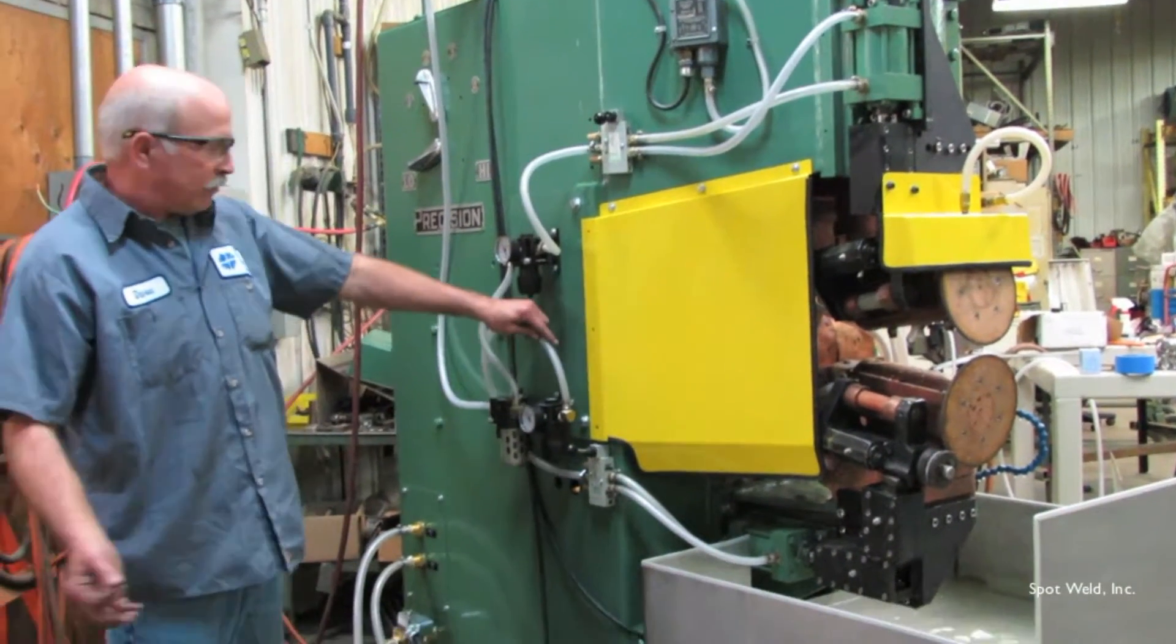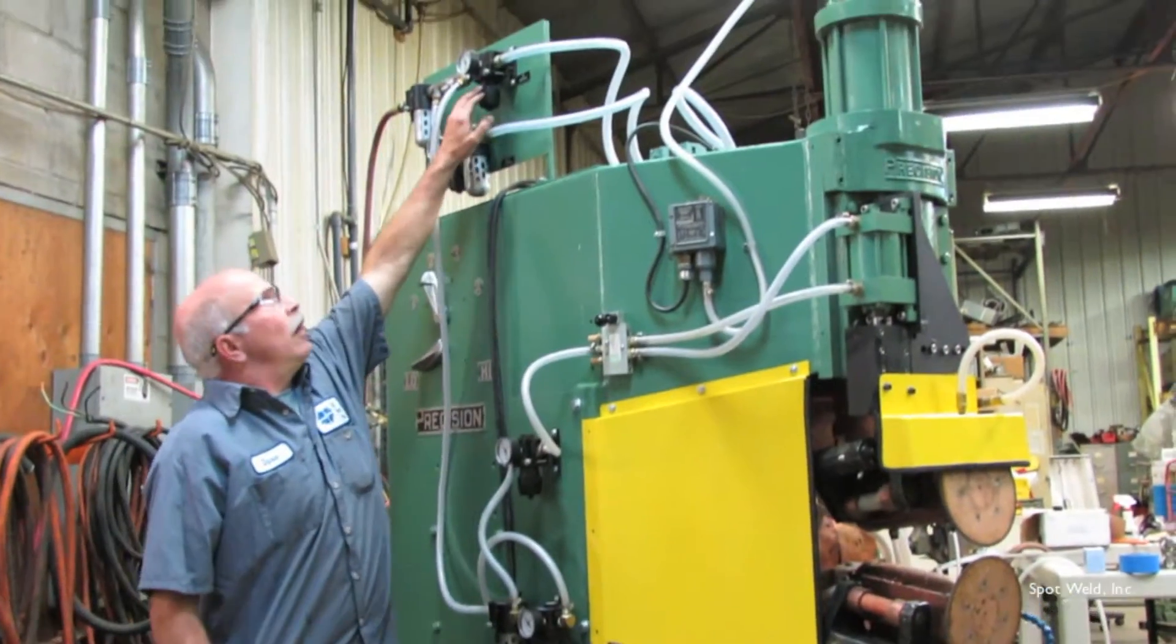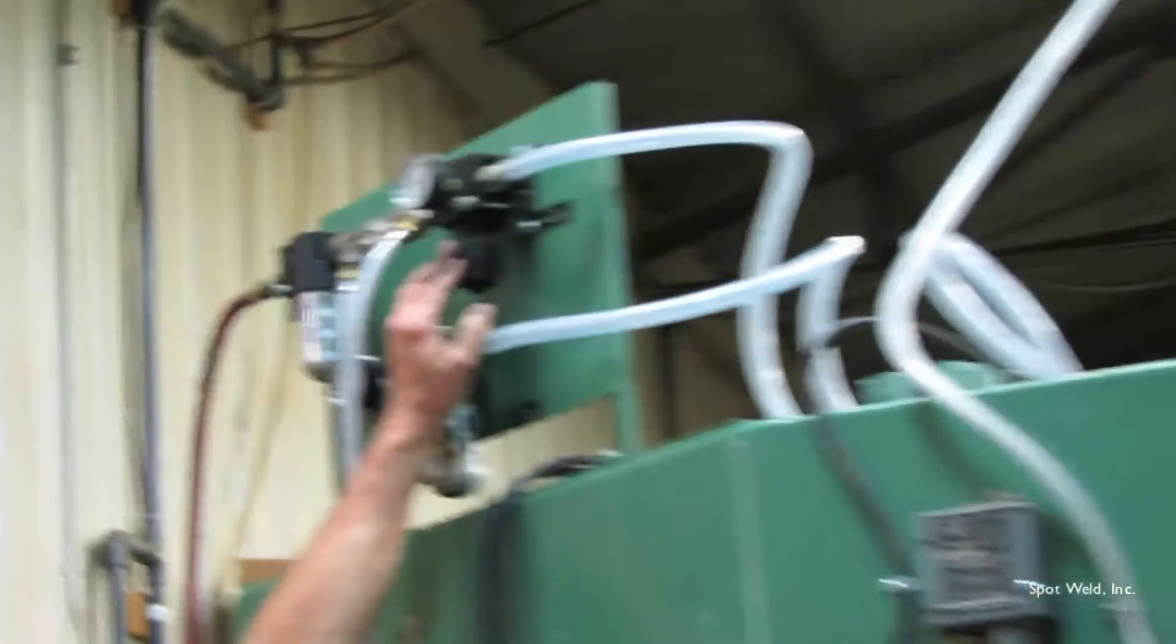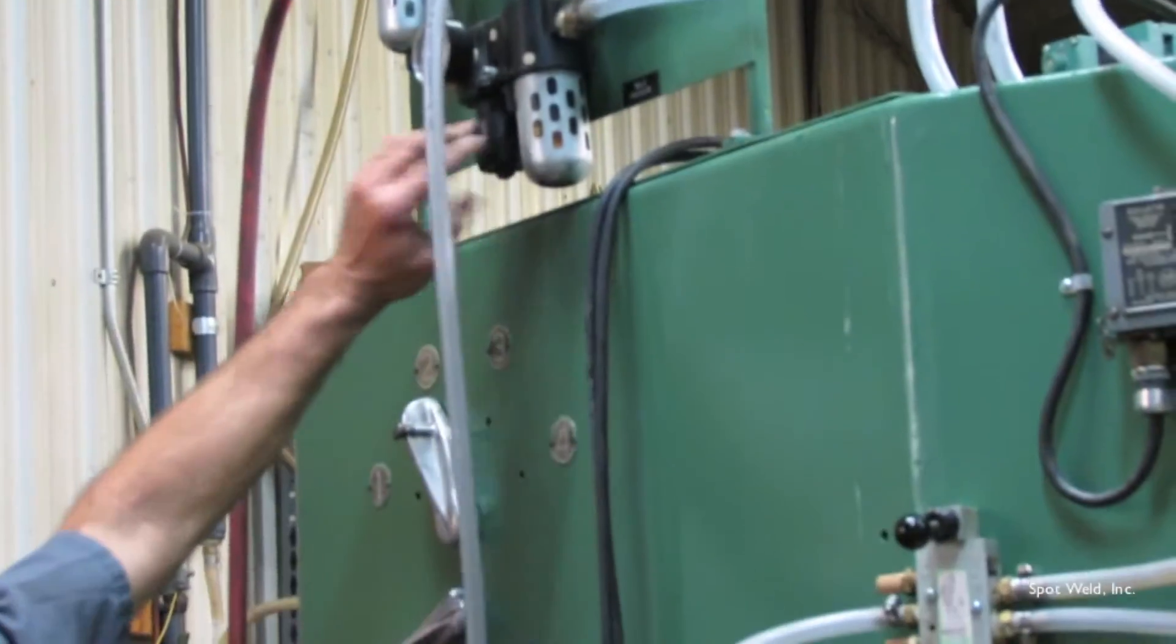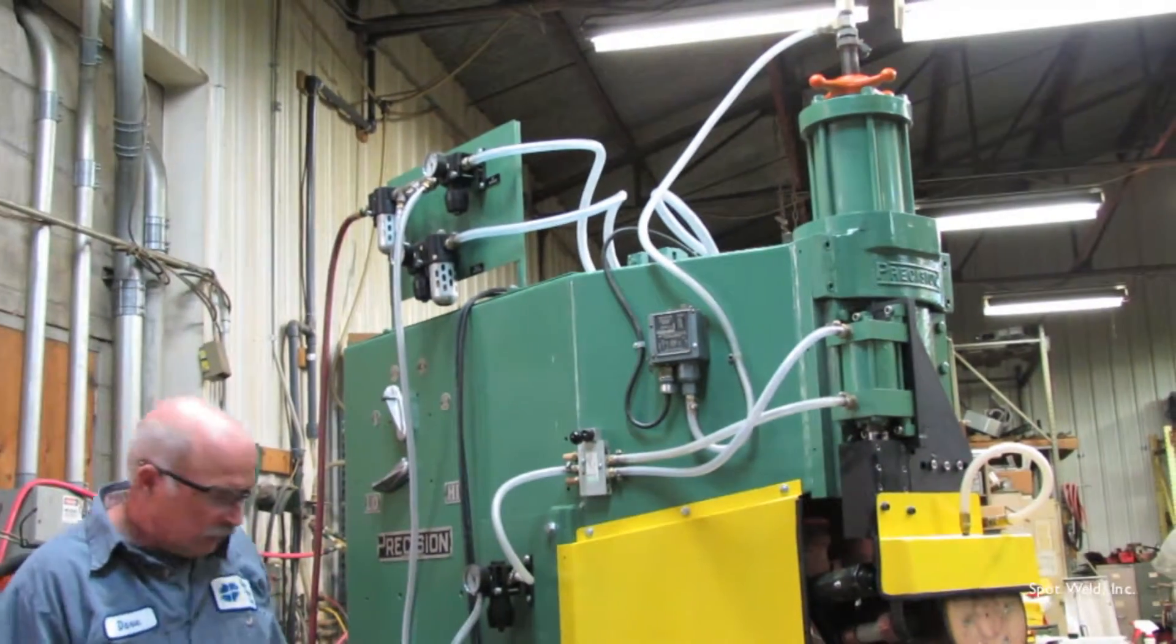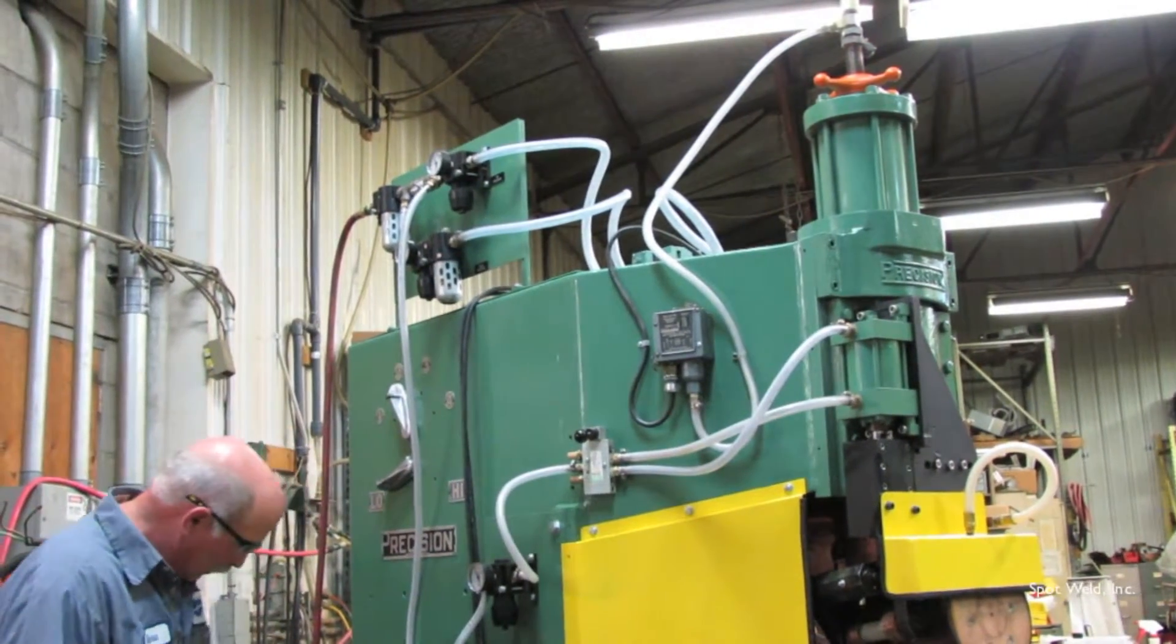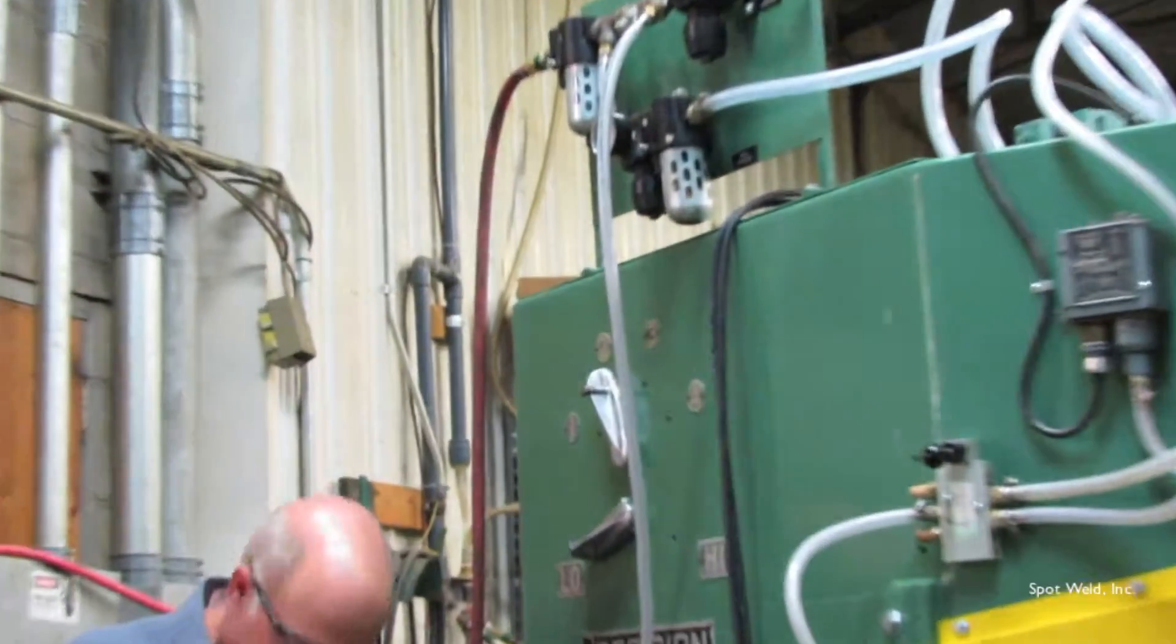Also on this side of the machine, you have your up pressure which is your return pressure, bringing the weld head up, and your weld pressure here with the lubricator which will put a fine mist of oil into the cylinder. The down pressure is your weld pressure.